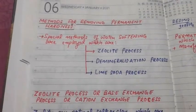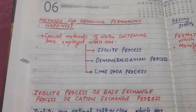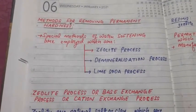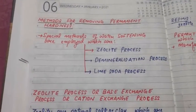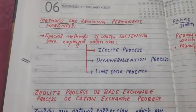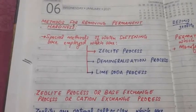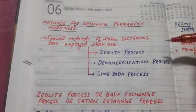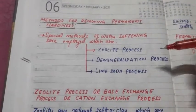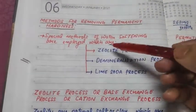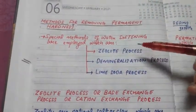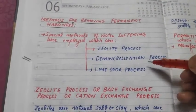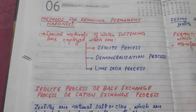We call this the water softening process, or removal of hardness. We have seen that temporary hardness is removed by boiling and addition of lime. Now, for permanent hardness, there are special methods: the zeolite process, demineralization process, and lime soda process.